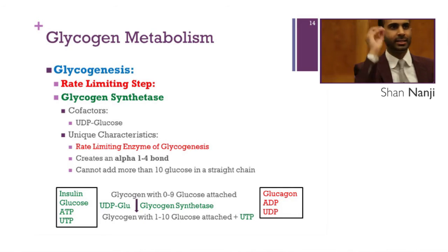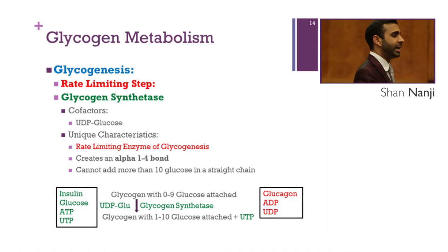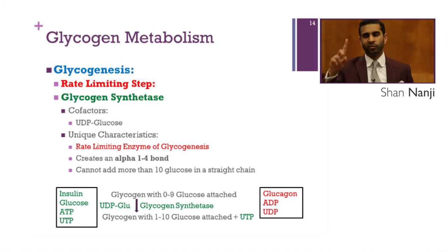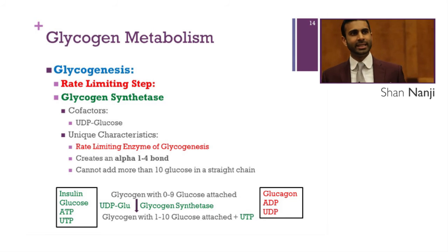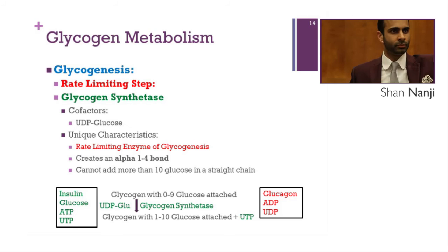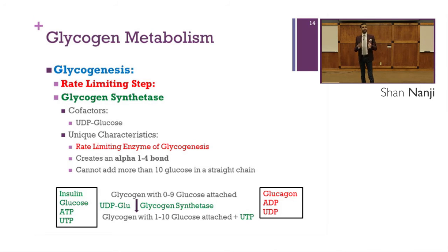Since G1P uridyl transferase requires one UTP and glycogen synthetase releases one UTP, the net energy requirement of glycogenesis is zero. The rate-limiting enzyme has a sigmoidal curve and the lowest Vmax in the pathway. Glycogen synthetase creates an alpha-1,4 bond and cannot add more than ten glucose in a straight chain.